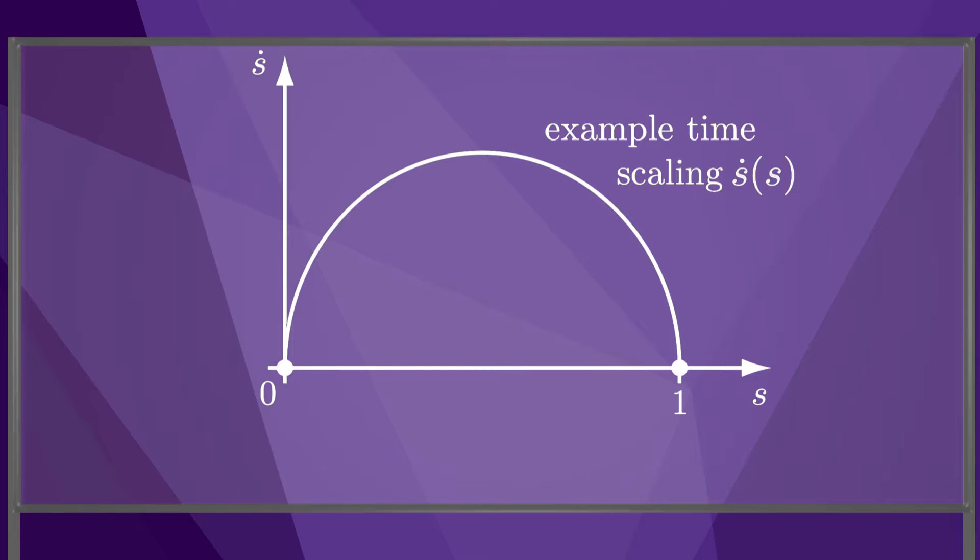A more typical time-scaling might look something like this. S dot starts out at zero, increases to a maximum value, then drops back to zero at the end of the motion. Until now, we have been expressing a time-scaling as s as a function of time, but here we're plotting it as s dot as a function of s. The same time-scaling can be represented either way, but in this time-optimal problem, it's more convenient to express the time-scaling as s dot of s.